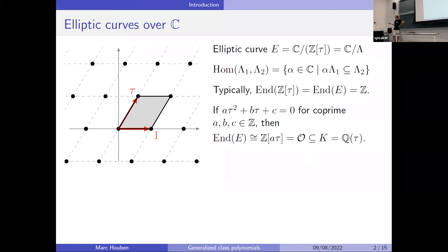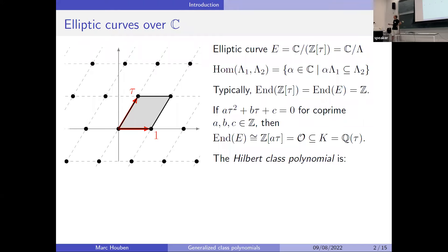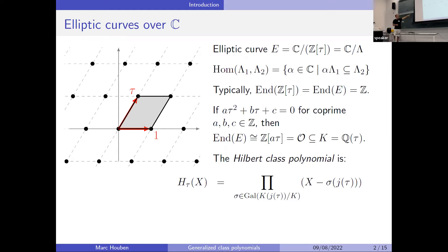If I have such a tau, I can look at something called the Hilbert class polynomial. That's just the minimal polynomial over k of the j-invariant of tau. I take the modular j-function, apply it to tau, and if I adjoin this to the field k, I get a Galois extension.